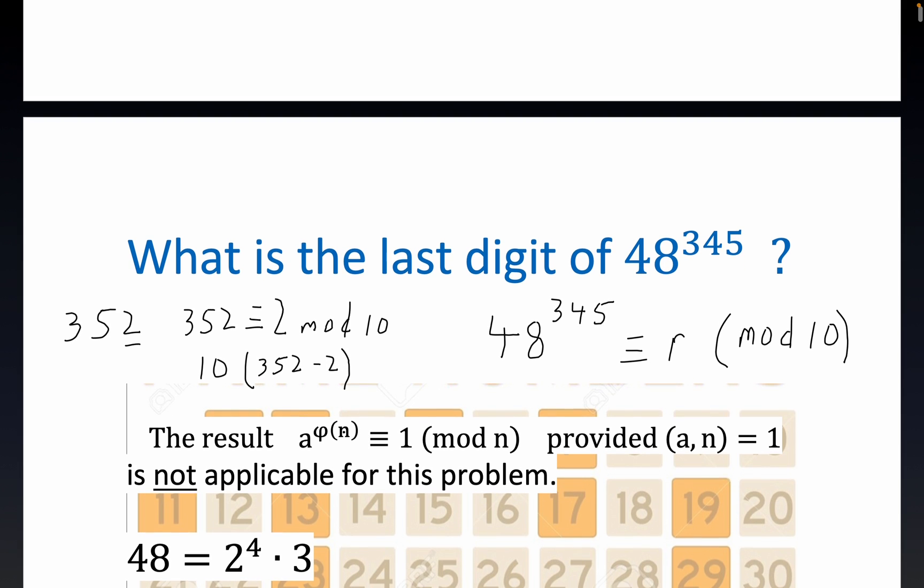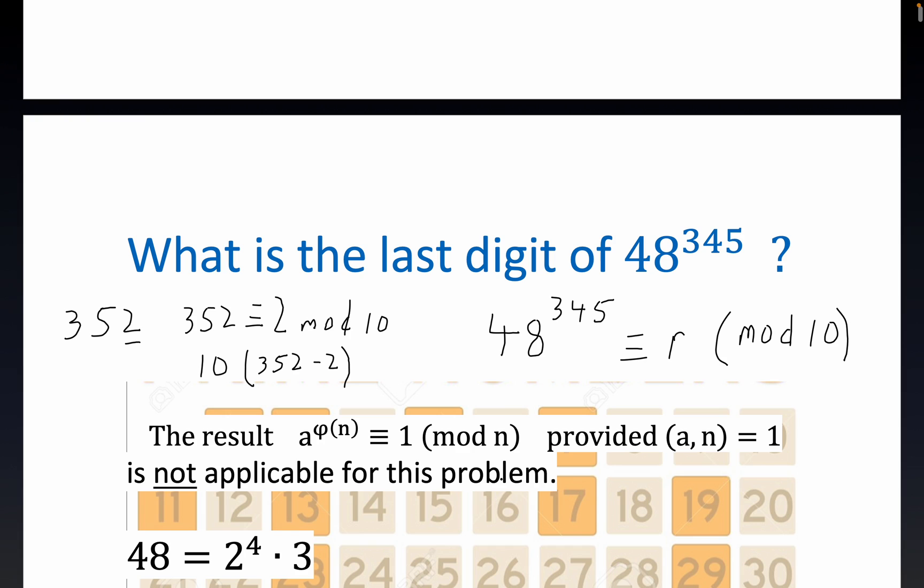This famous Euler phi result is not applicable because 48 and 10 are not relatively prime. They share a common factor of 2, so the GCD of 48 and 10 is 2. For this totient function result to hold, the base and the modulus have to be relatively prime, some people call that co-prime.